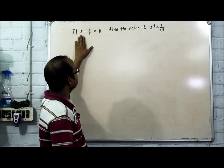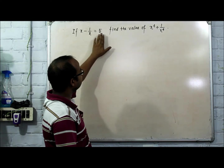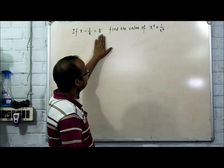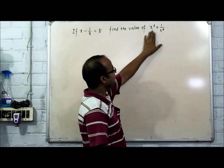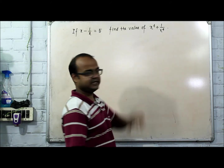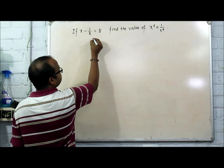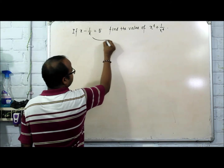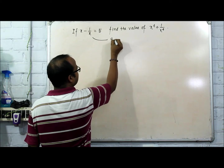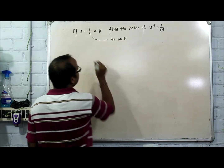It is given that x minus 1 by x is equal to 5. We have to find out the value of x raised to 4 plus 1 by x raised to 4.